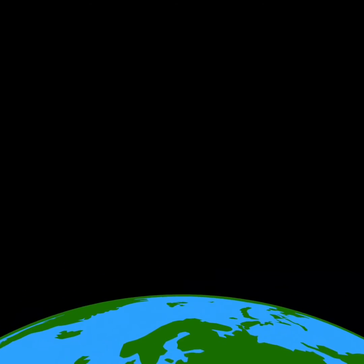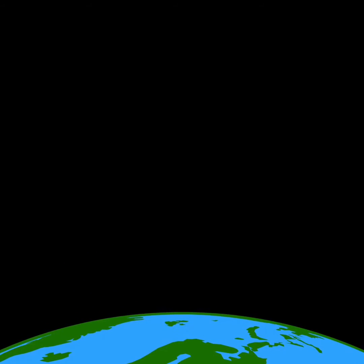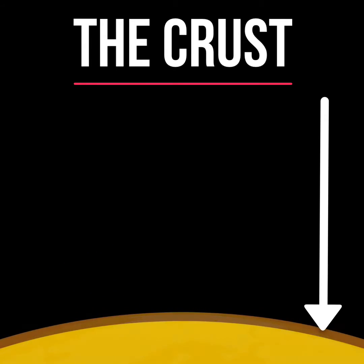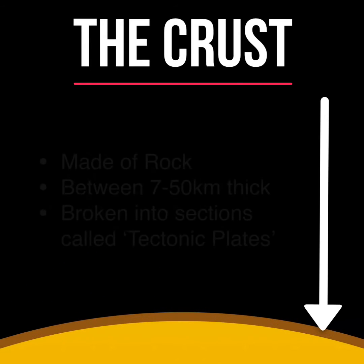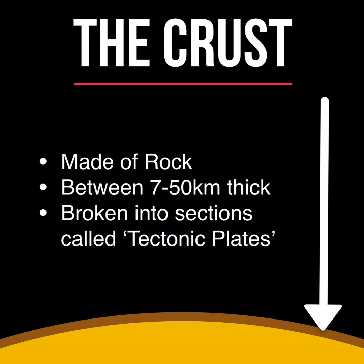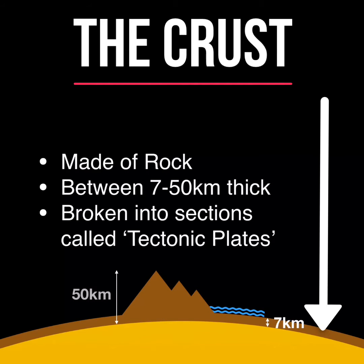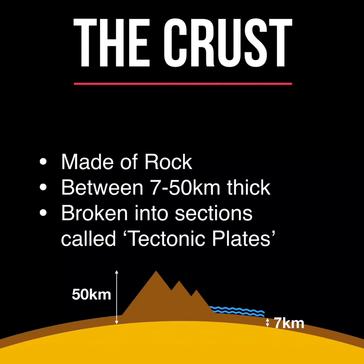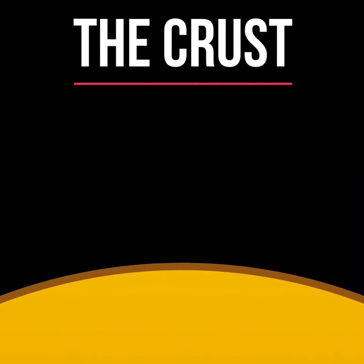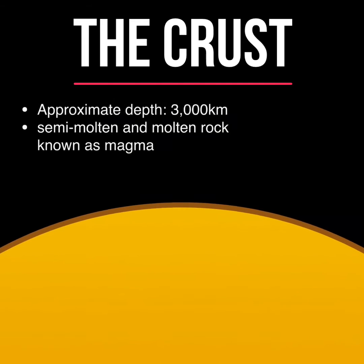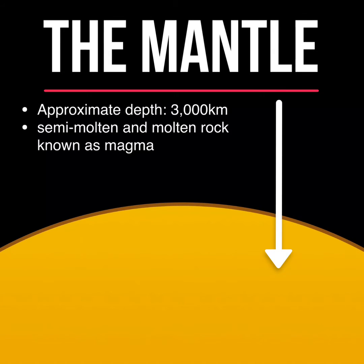The surface of the earth is known as the crust. The crust is made of rock and can vary between 7 and 50 kilometers thick in places. It is broken into sections called tectonic plates. The crust floats on the mantle, which has an approximate depth of 3,000 kilometers.